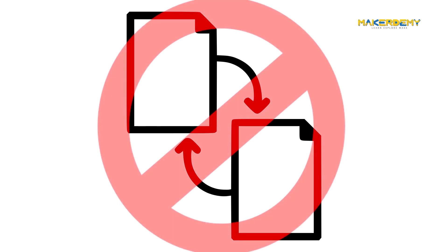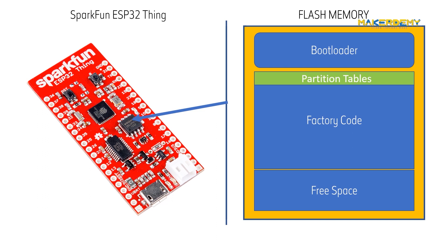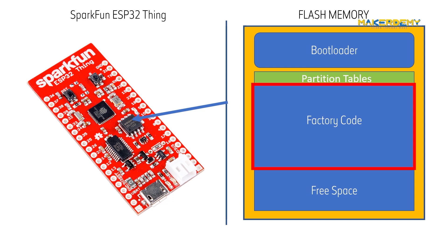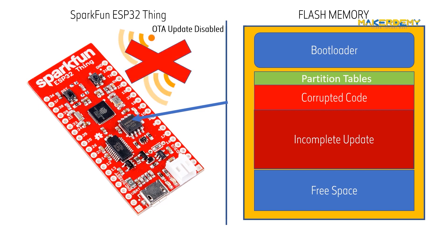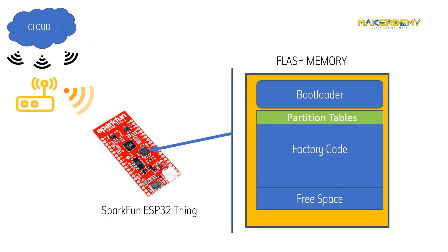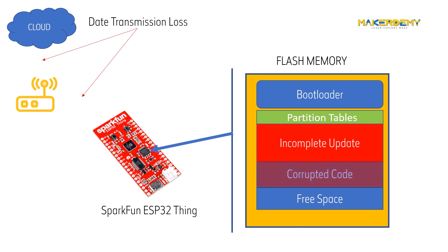There are two reasons for this. The first reason is that the current firmware is actually the one running and responsible for performing the network retrieval of data. Thus, while we override with new firmware, the network retrieval instructions might get corrupted and will result in an incomplete update that can disable OTA functionality altogether. The second problem is that something could go wrong with the data transmission and we would end up with a partial update which likely would not boot.